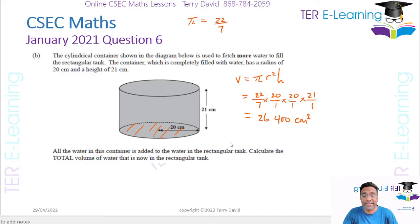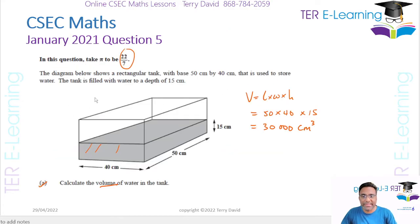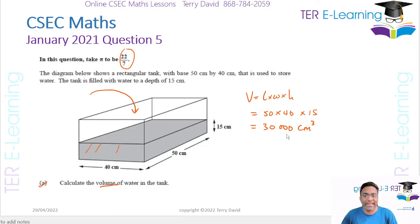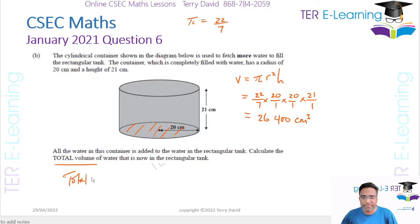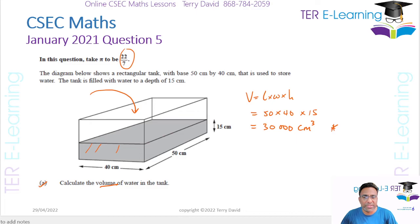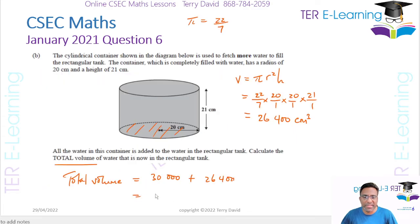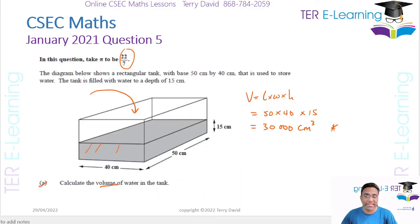The question asks us to calculate the total volume of water that is now in the rectangular tank. Basically, we are taking that cylinder and pouring all that water inside. So we take the volume we had before — 30,000 — and add it to the volume of the cylinder: 30,000 plus 26,400 gives us 56,400 cm³. That's the total volume of water now in the rectangular container.